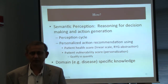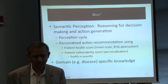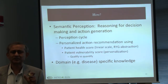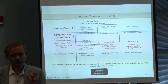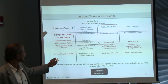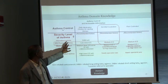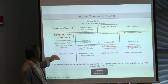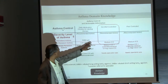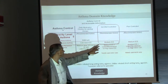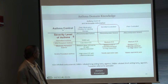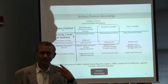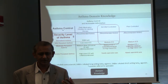We gave some examples of the actions you might take if you are an asthma patient. One key enabler for semantic perception is the use of domain-specific knowledge. For example, this is the protocol that doctors use to manage asthma in a patient. It has two aspects: asthma control level and severity level of asthma. If you have asthma that is not well controlled and might persist, then you would give that patient medium-dose inhaled corticosteroid. This knowledge is used to develop the ontology that semantic perception uses.